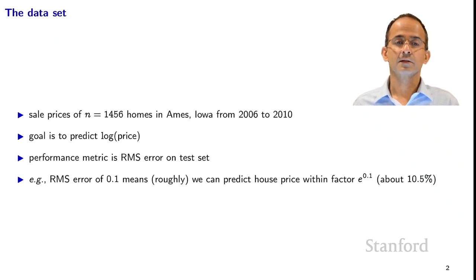This is a dataset that consists of prices and features for 1,456 homes in Ames, Iowa. Those were homes that were sold between 2006 and 2010. Here our goal is going to be to try to use the features of the houses in order to predict the price. And we're going to focus on predicting the log of the price because for prices, relative price is much more important than absolute price. House prices typically vary over a significant range. So our performance metric is going to be the RMS error on the test set of the log of the house price. In particular, if you have an RMS error of say 0.1, then it means that you can predict house prices within a factor of e to the 0.1, which is about 10.5%.